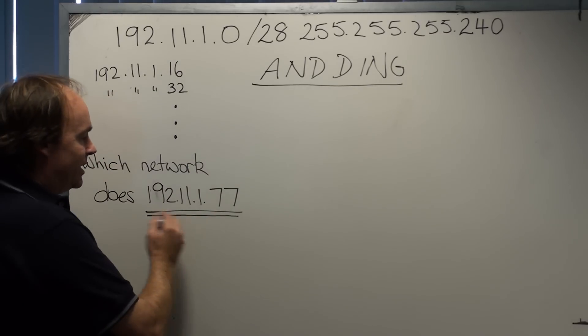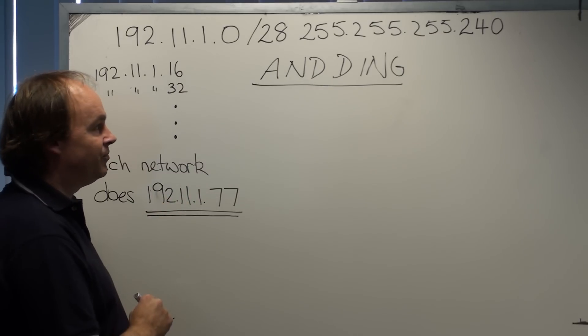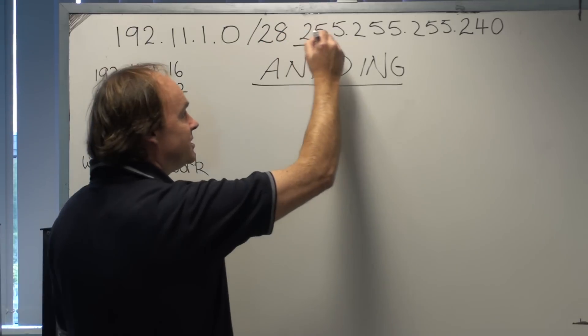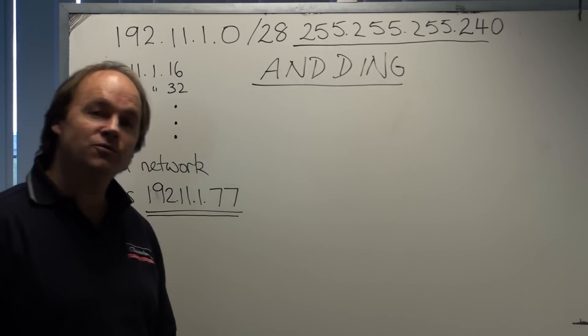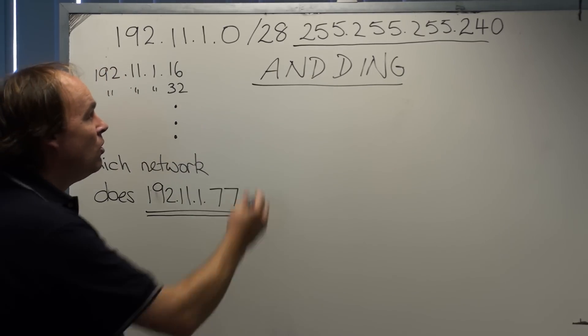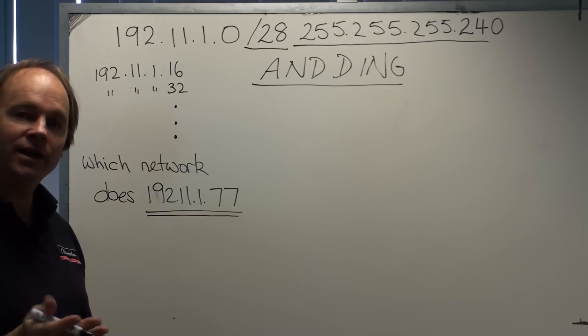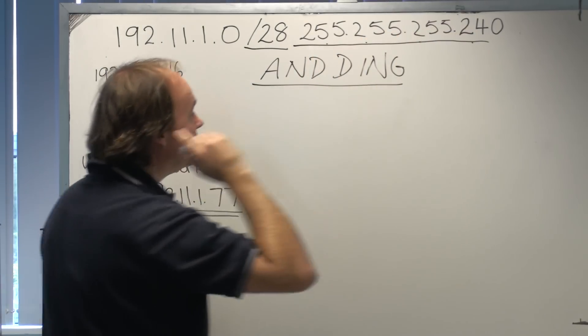Let's say the packet comes in with a destination address of 192.11.1.77. The router uses the mask. In this case our mask we know from before was 255.255.255.240, or in the CIDR notation slash 28. There's 28 network bits: 8, 8, 8, and 4 is 28.